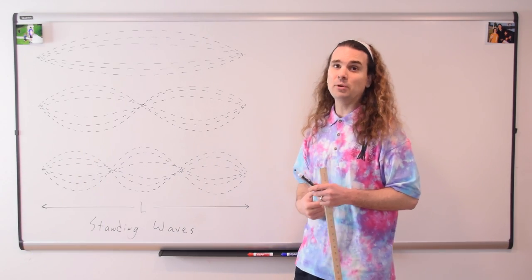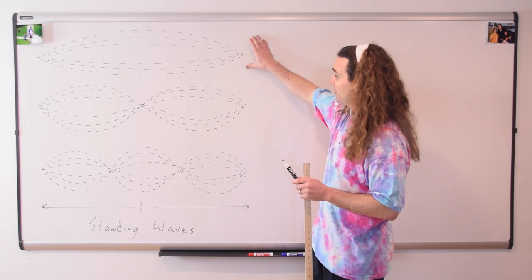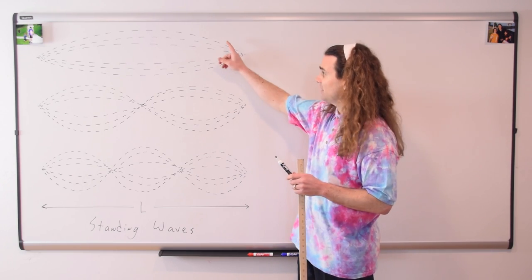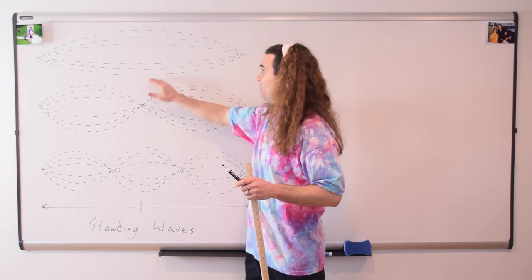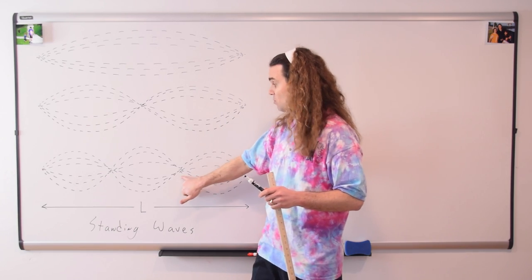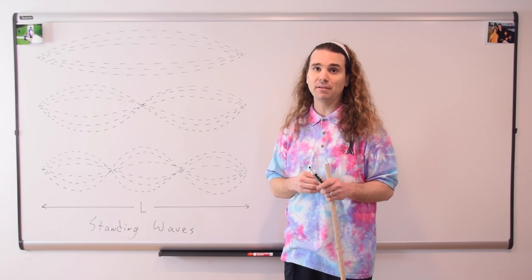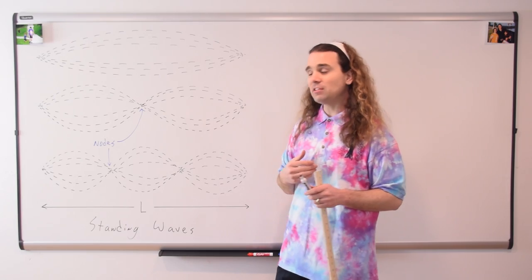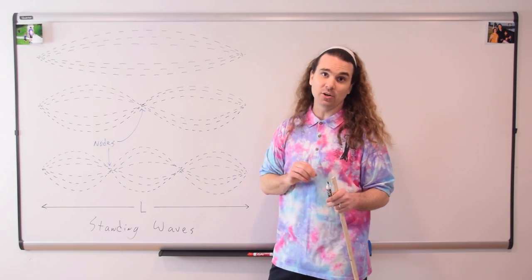This is how we draw standing waves. Notice L, the length of the rope. I've set up different standing wave patterns in the rope; the dotted lines represent locations the rope could be at some point in time. The rope is moving up and down at certain locations. Where it's not moving — locations of total destructive interference — are called nodes. Locations of constructive interference are called antinodes.